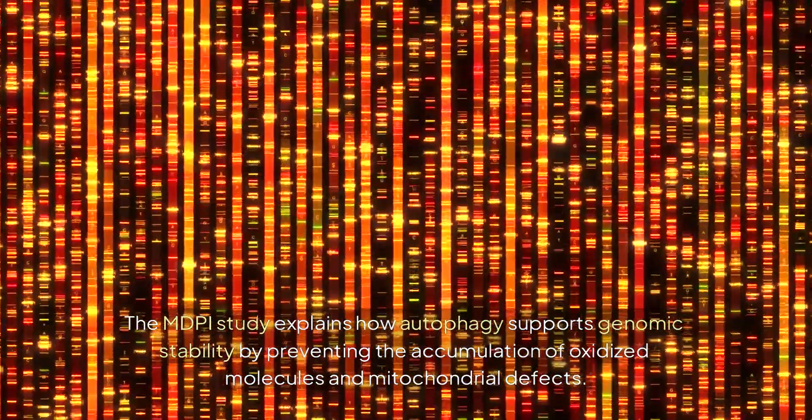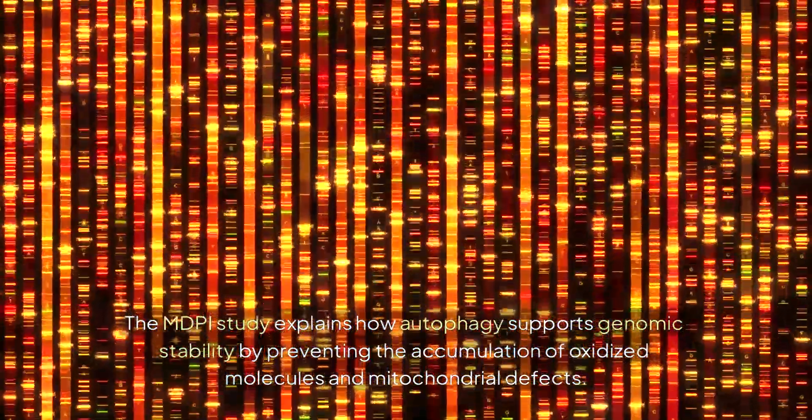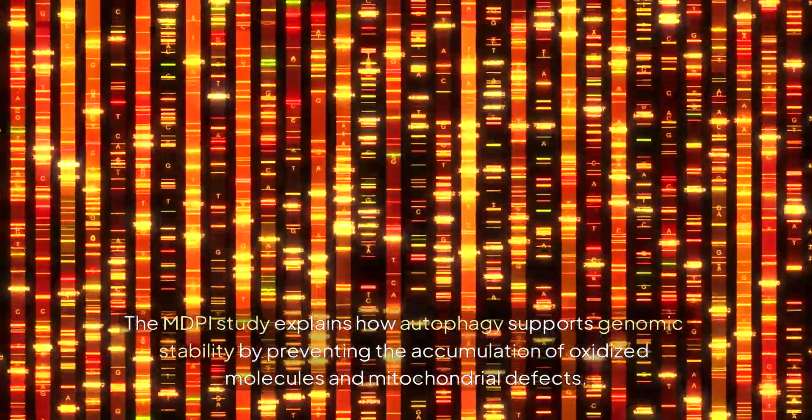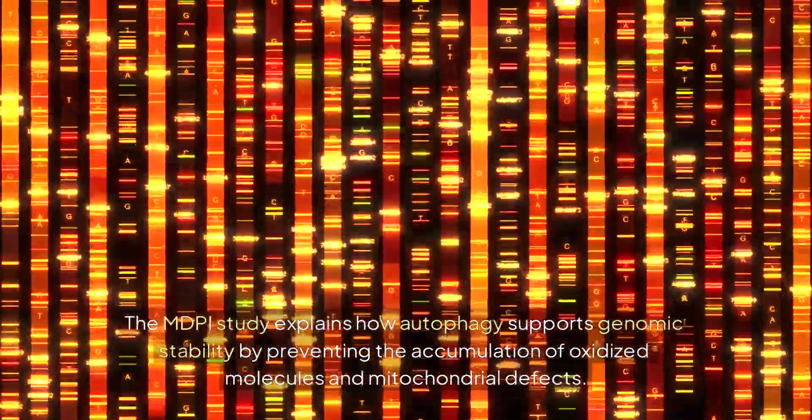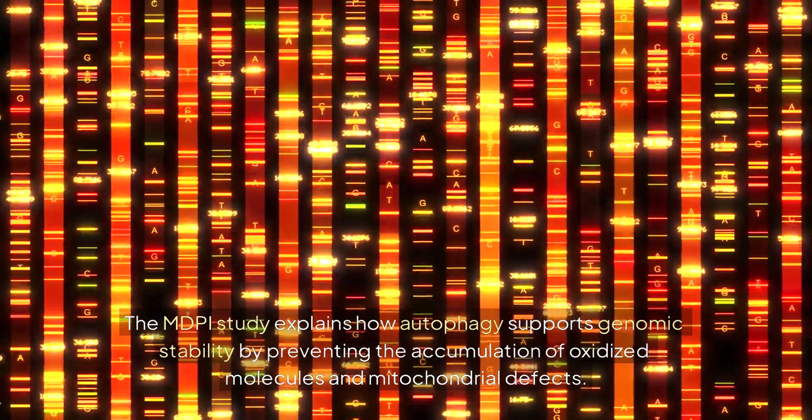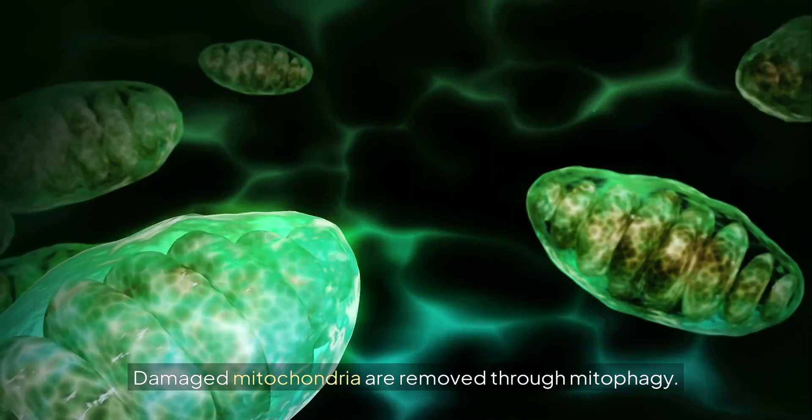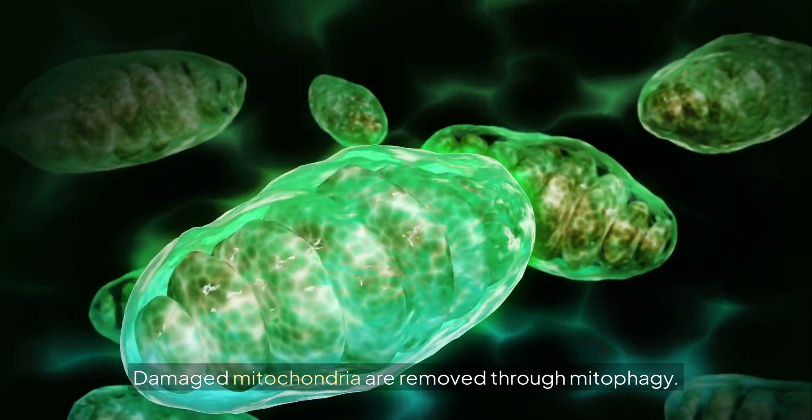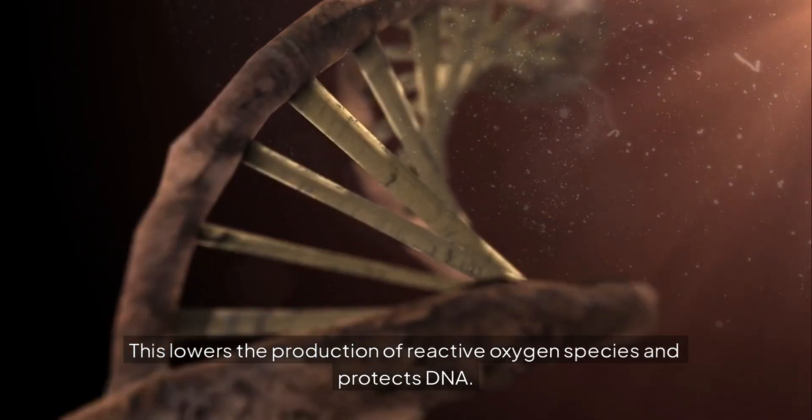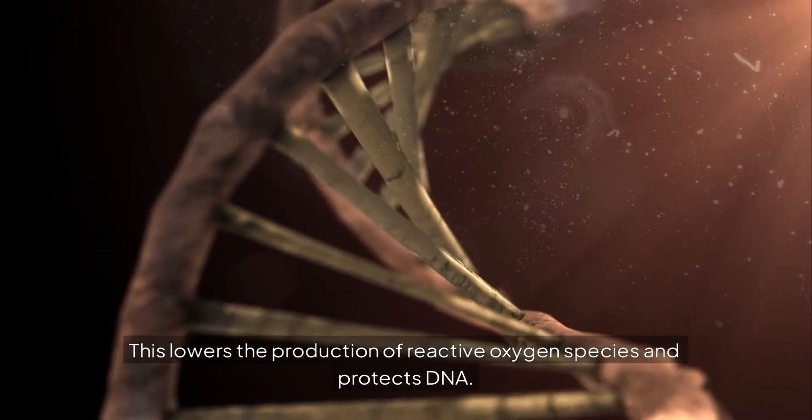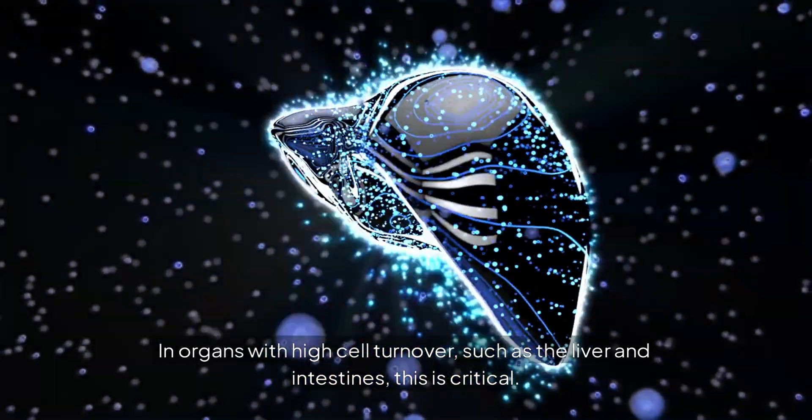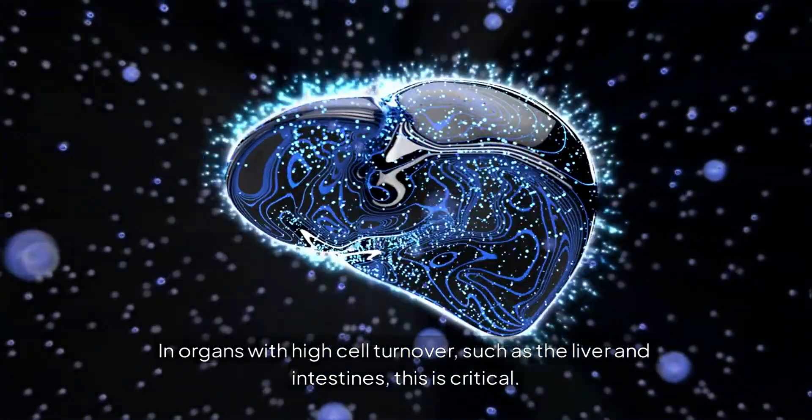The MDPI study explains how autophagy supports genomic stability by preventing the accumulation of oxidized molecules and mitochondrial defects. Damaged mitochondria are removed through mitophagy. This lowers the production of reactive oxygen species and protects DNA. In organs with high cell turnover, such as the liver and intestines, this is critical.